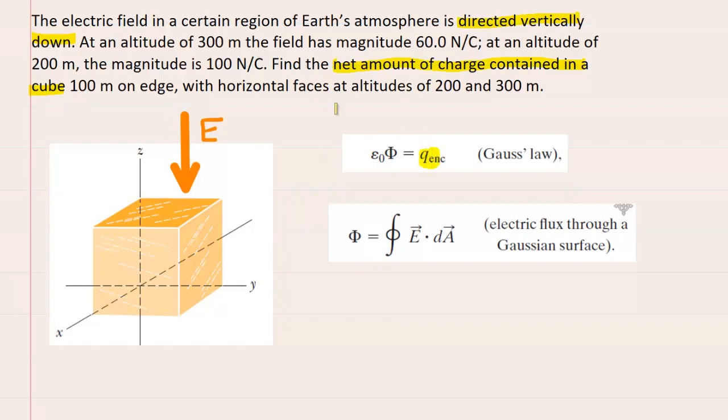Now to calculate the amount of charge that is contained inside of this cube we have to multiply a constant value epsilon by a quantity known as the electric flux. So what we really need to do is figure out the electric flux for this cube.